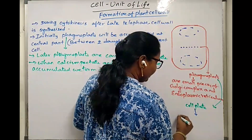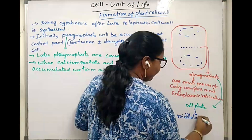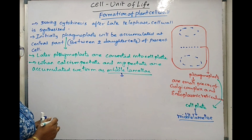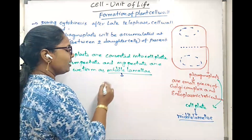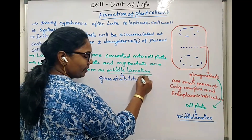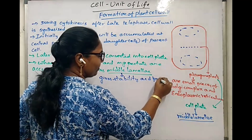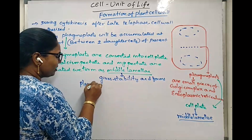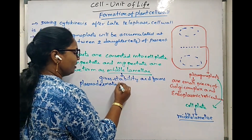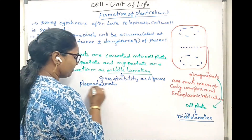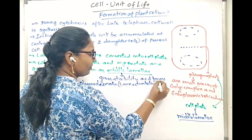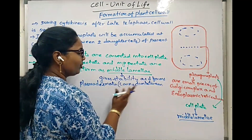This cell plate structure is getting converted into middle lamellae. Middle lamellae does some functions like giving stability to the total cell, and it forms plasmodesmata. Plasmodesmata is a connection between two cells — two side-by-side or neighboring cells.